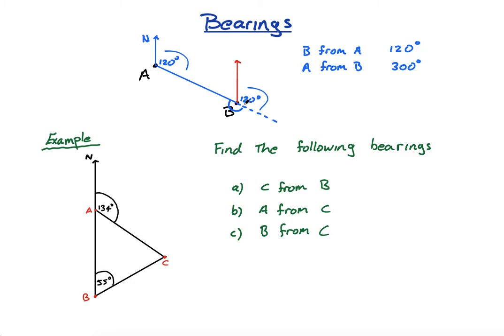So if this is 120 and then this angle is obviously 180 because this is a straight line, the bearing of A from B is going to be 120 plus 180, which is actually 300 degrees. Note, because of this, the bearing of A from B and the bearing of B from A are always, there's a difference of 180 degrees for this reason.